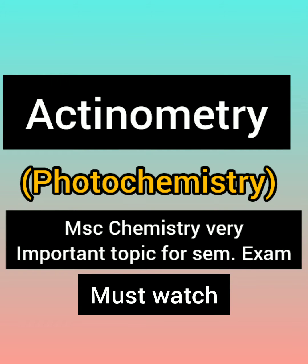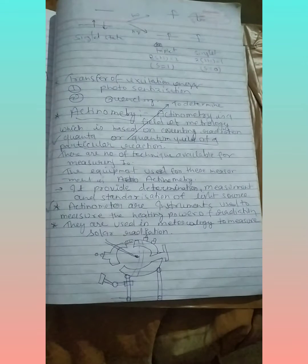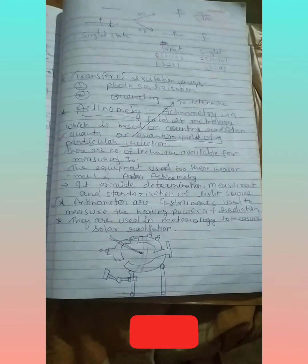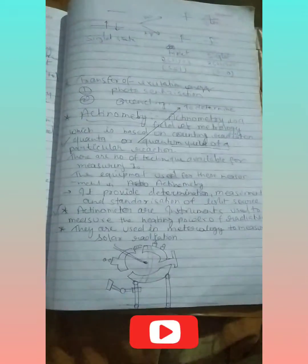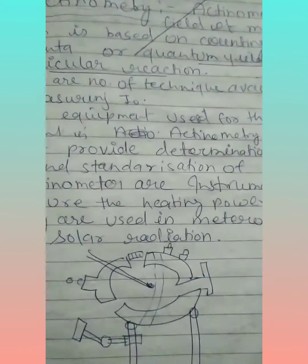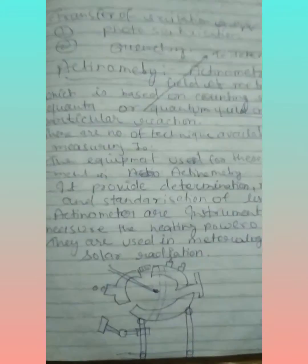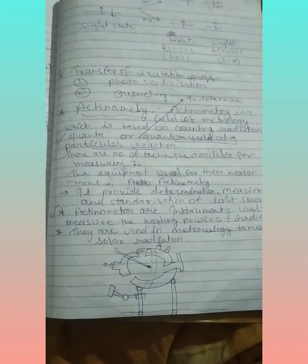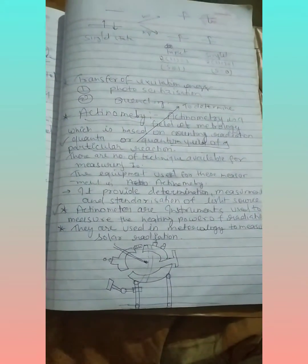Hello, welcome. I am studying actinometry. Actinometry is a field of metrology which is based on counting radiation of quanta or a particular reaction. There is a main technique to measure quantum for a particular reaction.